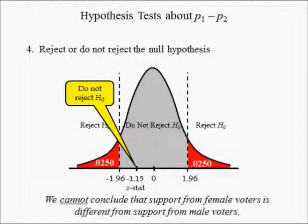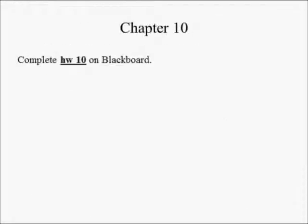Hence, at the 5% level of significance, we cannot conclude that support from female voters is different from the support John is getting from males. Complete homework 10 on Blackboard.